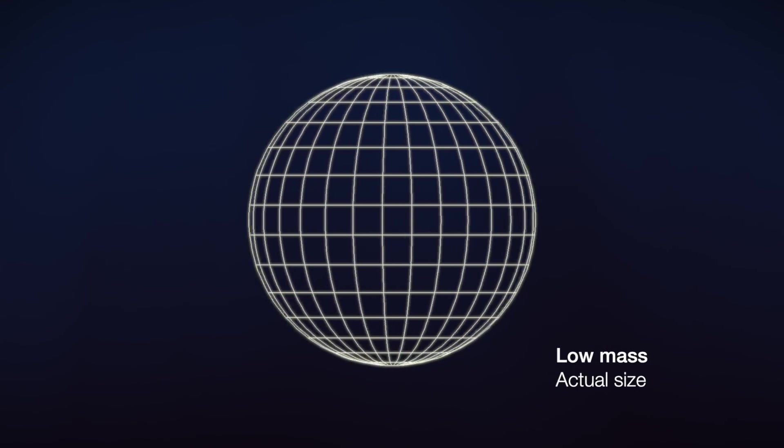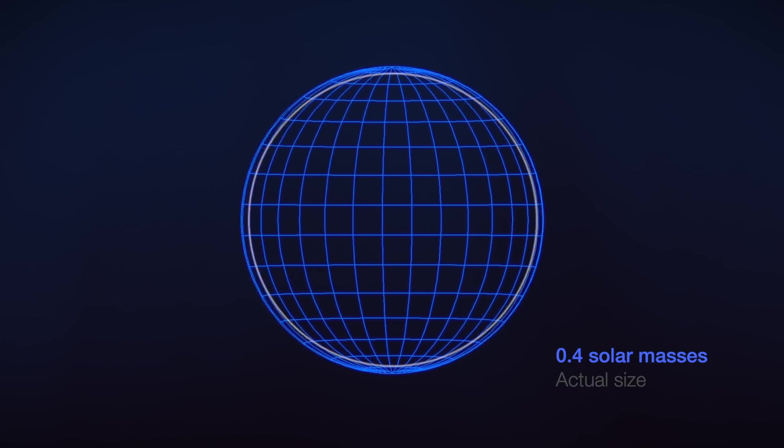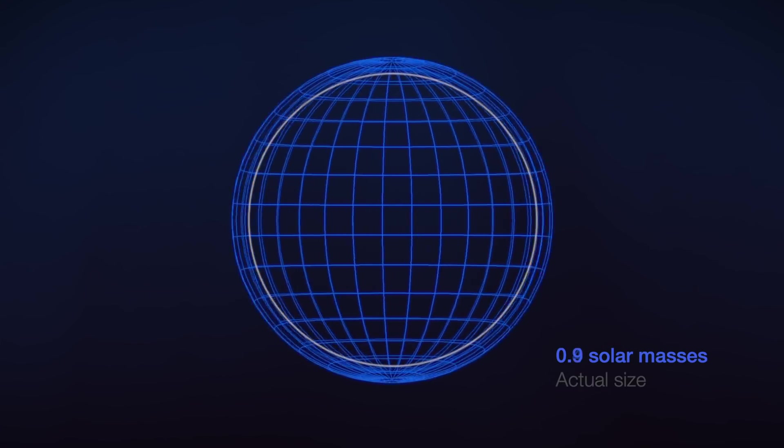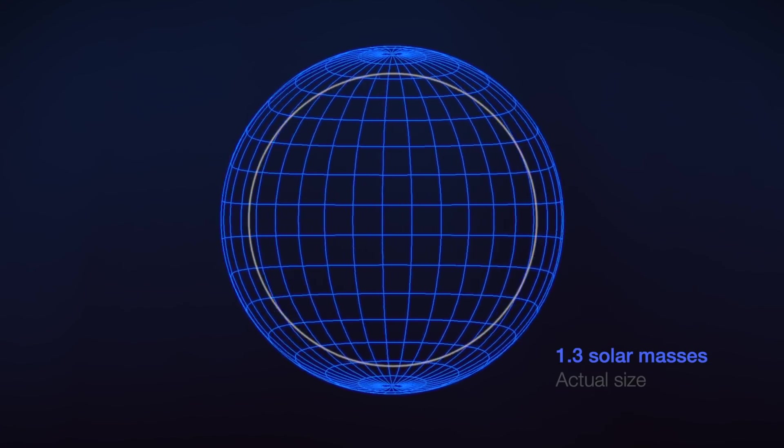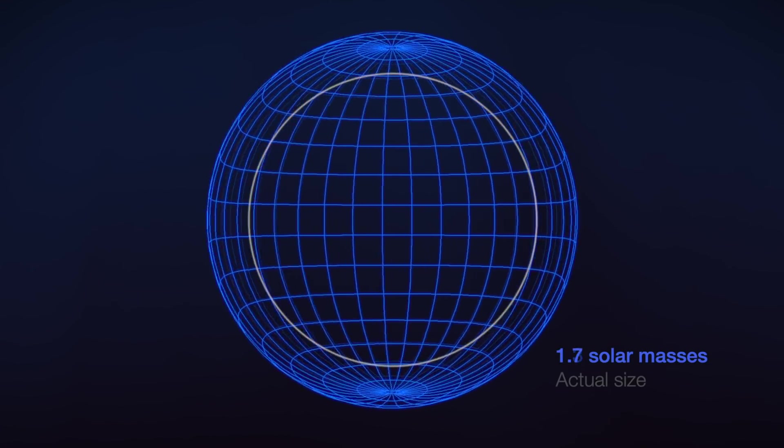This is a pulsar-sized object about 16 miles across, but with much less mass. We only see light from the side of the object nearest to Earth, but as its mass increases, the object warps spacetime and acts like a lens to show us light from the far side. This has the strange effect of making a pulsar look bigger than it really is.